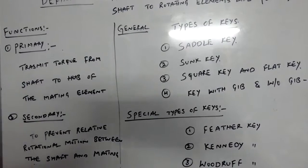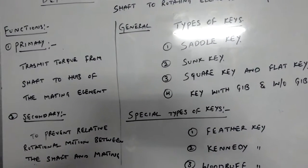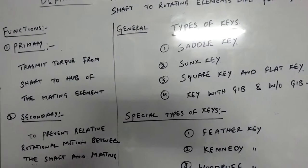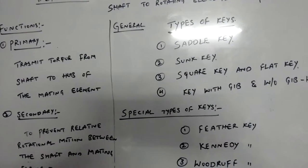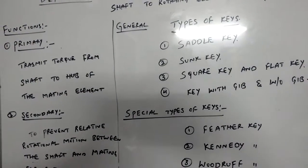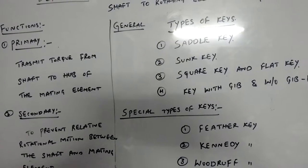For example, if you take a gear and a shaft arrangement, this gear and the shaft can be connected with the help of some intermediate element like key.